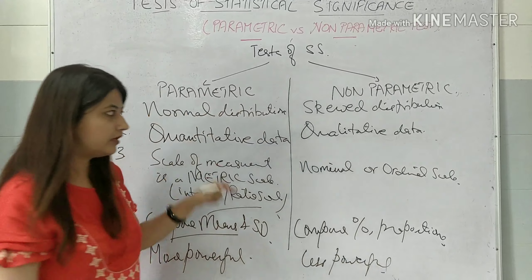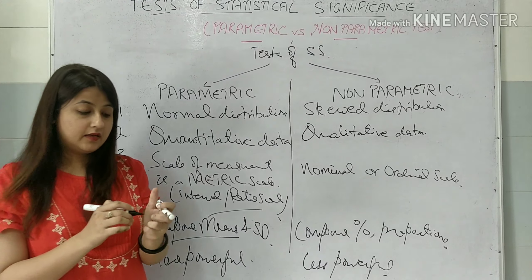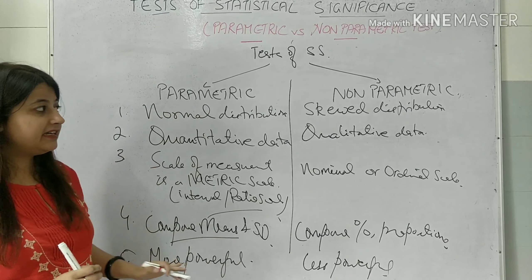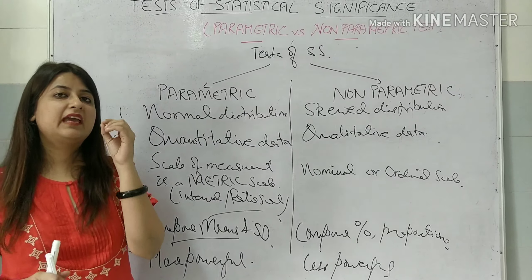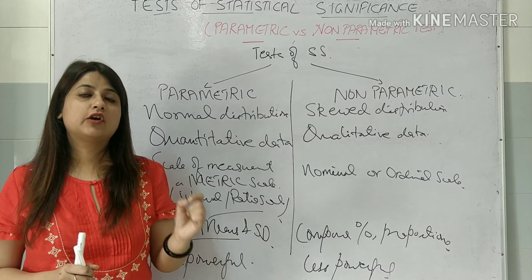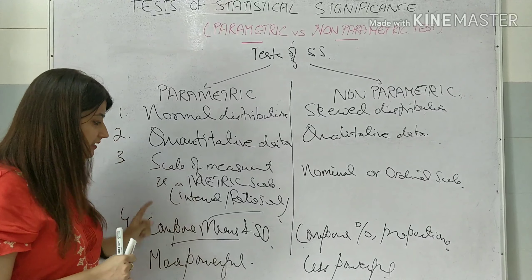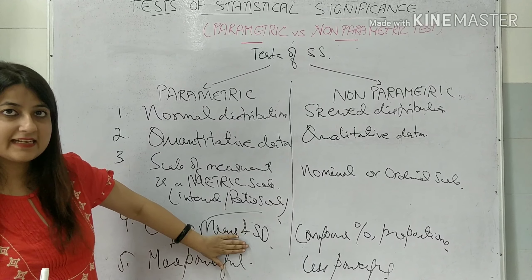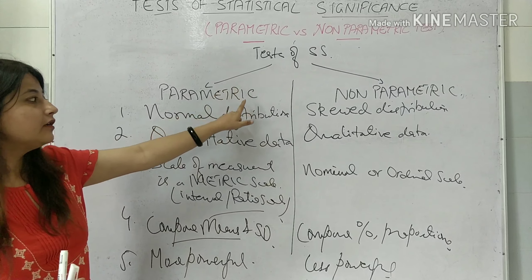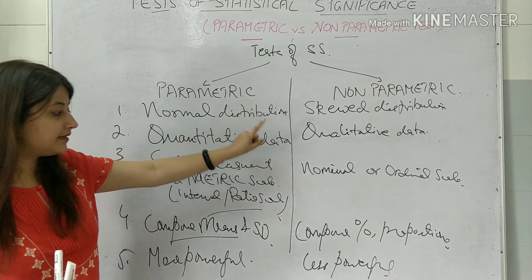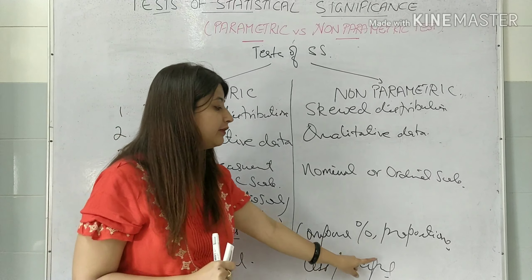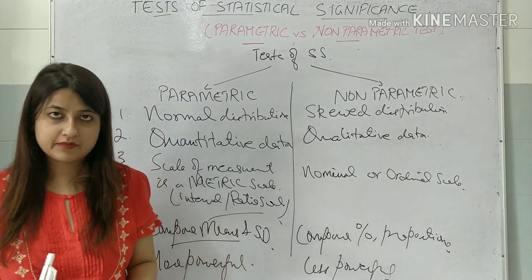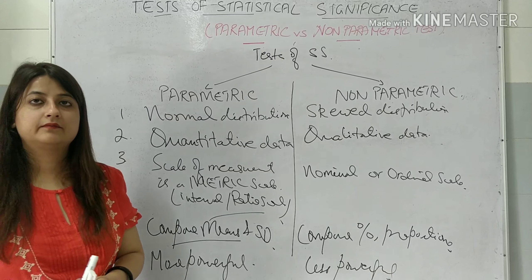This can also come as a university question. To be able to solve your MCQs, please remember: if you are given means and standard deviations, you will use parametric tests. If you are given percentages and proportions, you will use a non-parametric test.